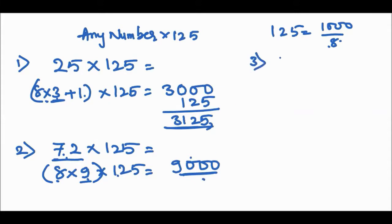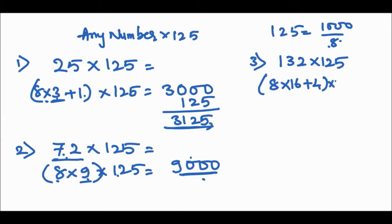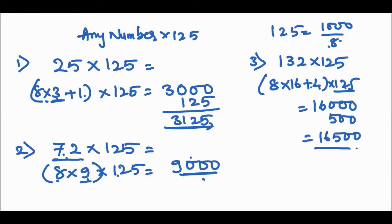Third example: 132 into 125. Write 132 as 8 × 16 + 4, since 8 × 16 = 128 and remainder 4. So 16000 plus 125 × 4 = 500. The answer is 16500, done in two to three seconds.